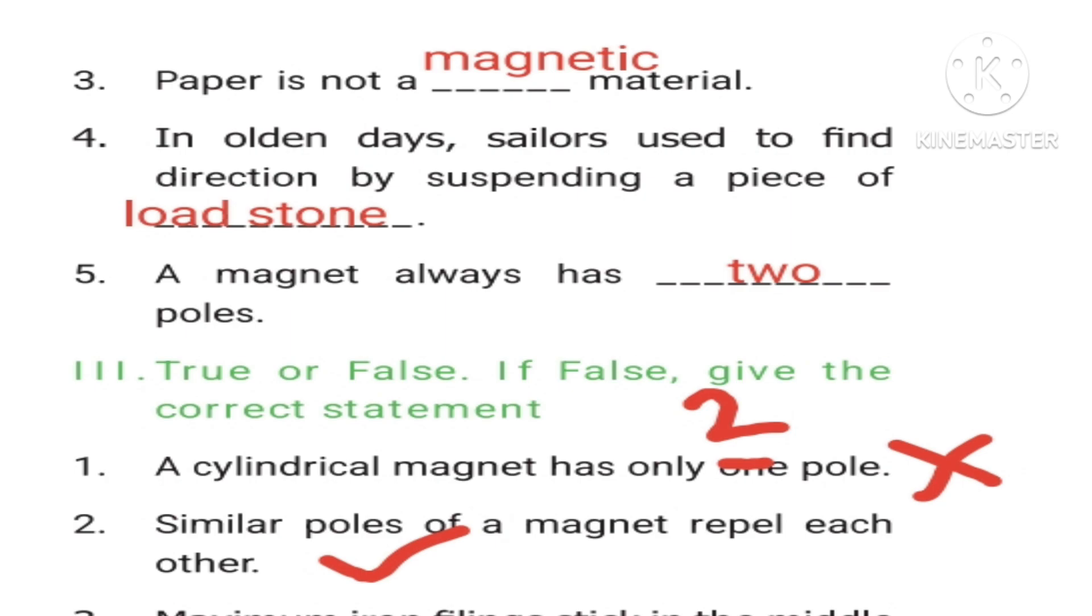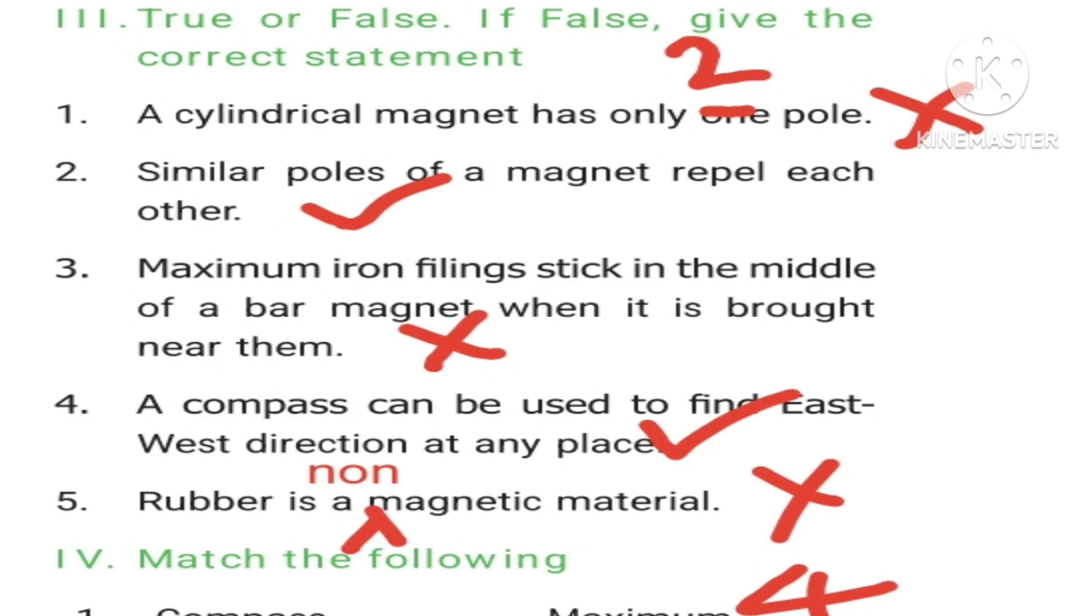Roman letter 3, true or false. If false, give the correct statement. First question: A cylindrical magnet has only one pole. The statement is wrong. Answer is two poles. Second question: Similar poles of a magnet repel each other. Answer is correct. Third question: Maximum iron filings stick in the middle of a bar magnet when it is brought near them. The statement is wrong. Look at the first line. Replace the middle of a bar magnet with poles of a bar magnet.